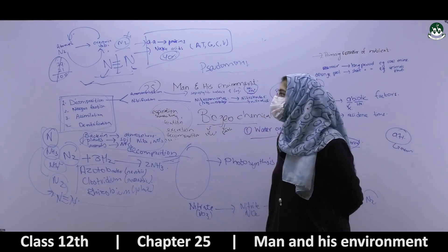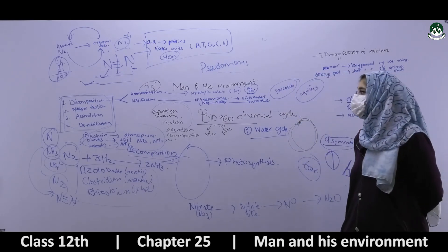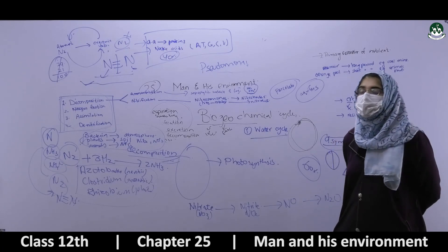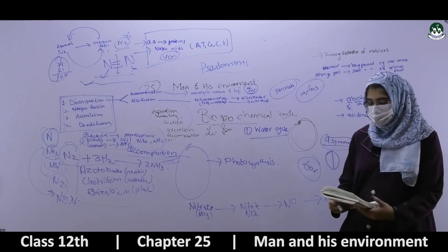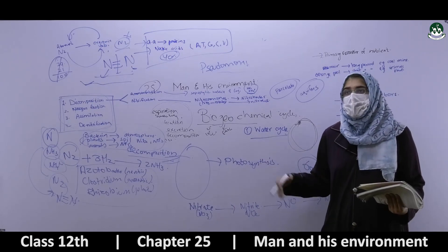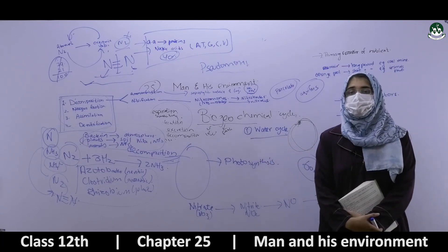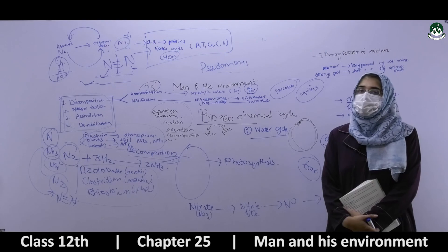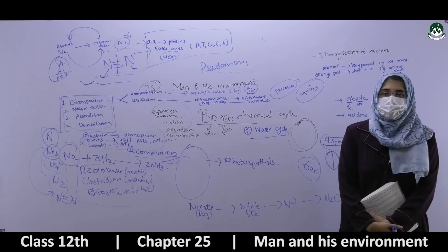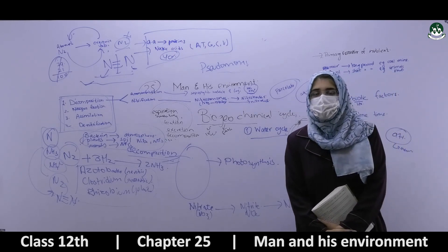This concludes our discussion of biogeochemical cycles — water cycle and nitrogen cycle — which is the first lecture of Chapter 25 of second year biology. In the next lecture, we will discuss energy levels and how energy flows through an ecosystem. Please read these topics once more and everything will be even clearer. Take care, see you in the next lecture. Allah Hafiz.